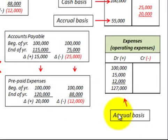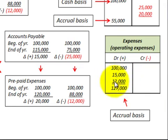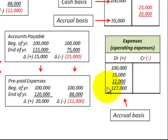To determine our accrual basis, we look at the debit balance in our expense account. We take the $100,000 cash basis — those are the payments made on the cash basis — then add the $15,000 increase in accounts payable and the $12,000 reduction in prepaid expenses. The resulting balance is our accrual basis: $127,000.